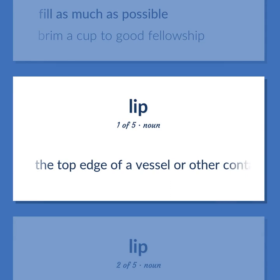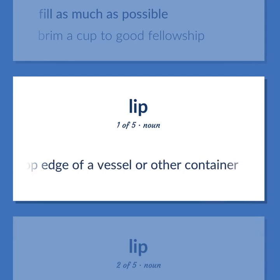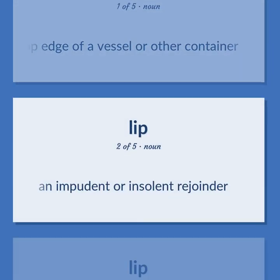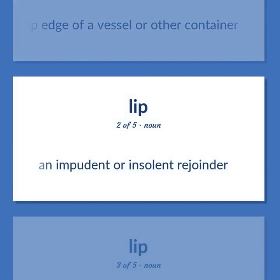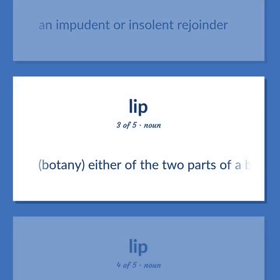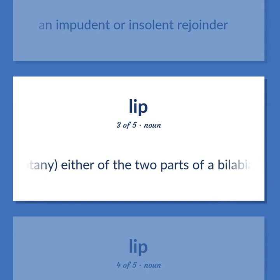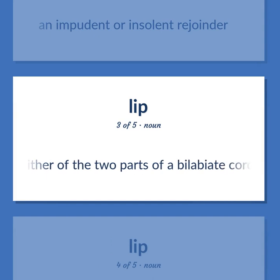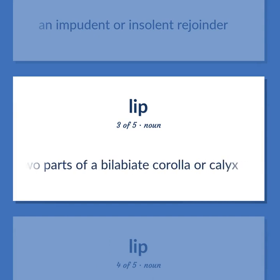BRIM (continued): The top edge of a vessel or other container. A circular projection that sticks outward from the crown of a hat. LIP: An impudent or insolent rejoinder.